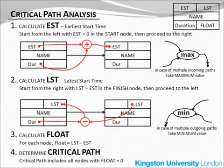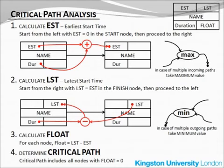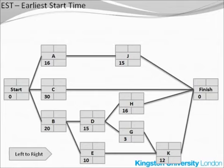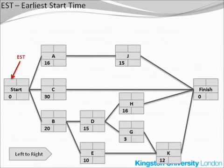We will now calculate the earliest start time, or the EST, for each activity. This calculation starts with the start node, goes from left to right, and finishes with the finish node. The EST is normally shown in the upper left-hand corner of each activity box. With the start node it's easy — the EST, the earliest start time, is always zero.